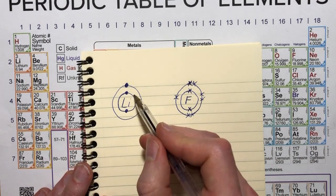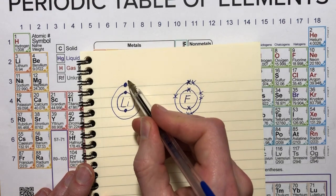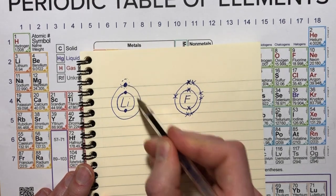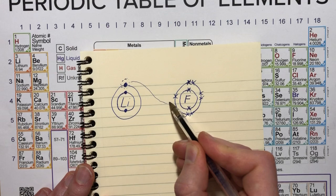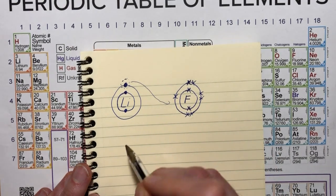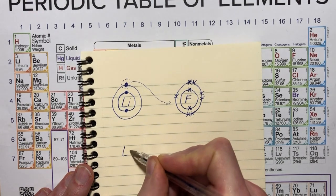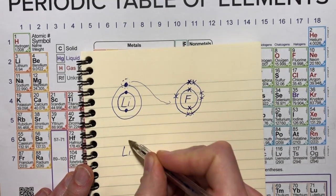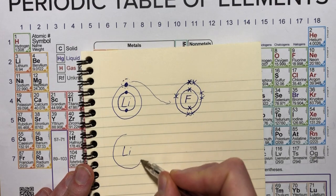So you can see what can happen is lithium can gain a full outer shell if it loses this electron and allows it to travel over here. And that way, fluorine will gain a full outer shell as well. And if that happens, the outer shell of lithium becomes the first one, the one that just has two electrons.